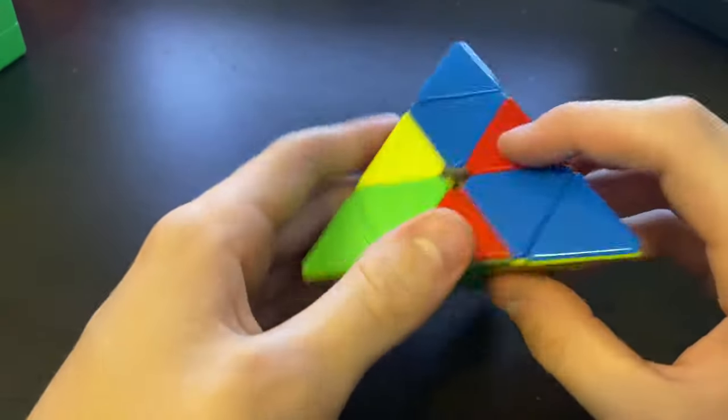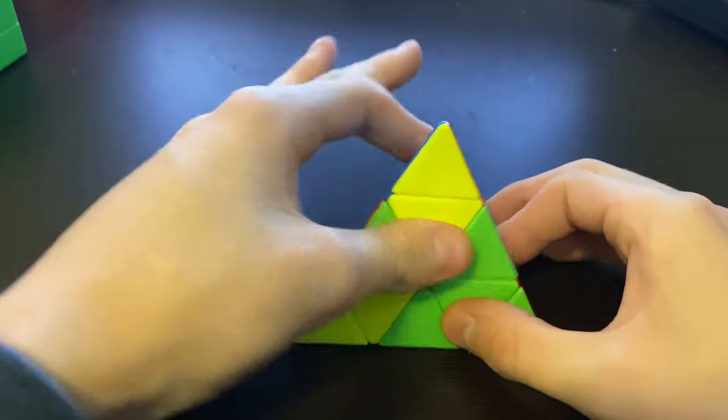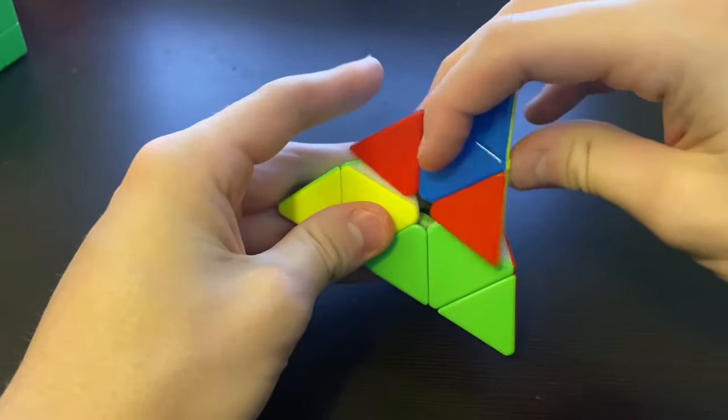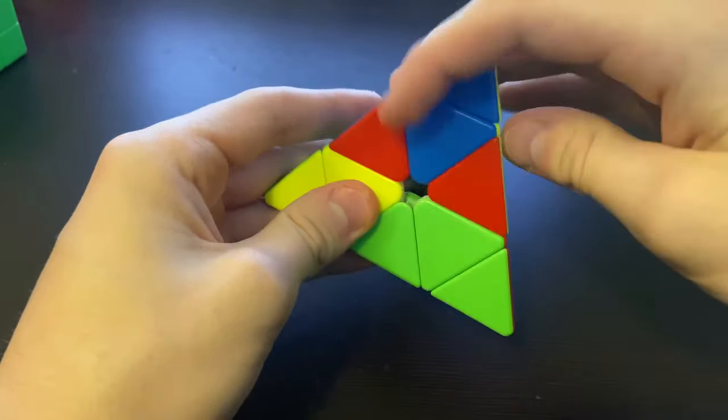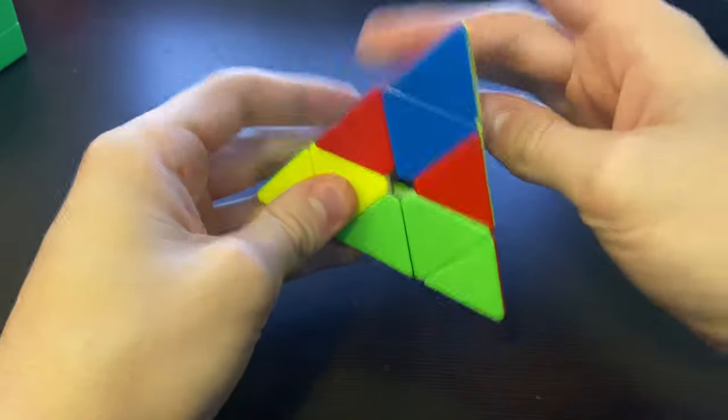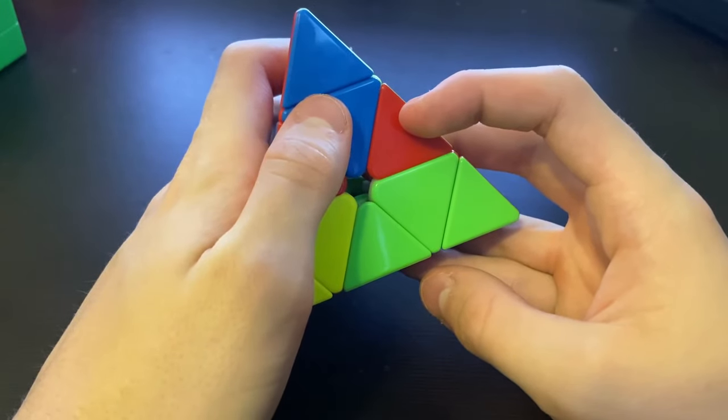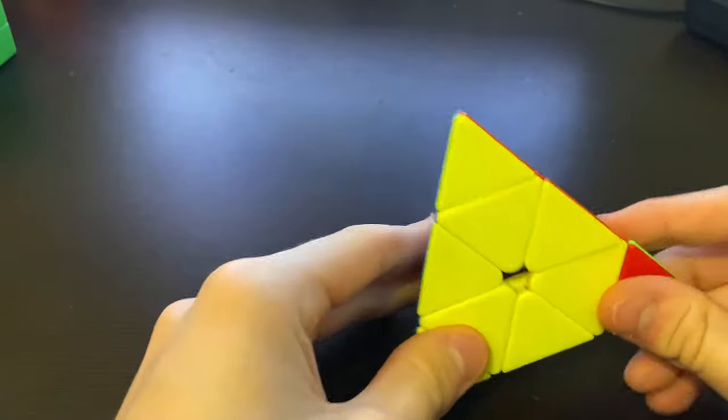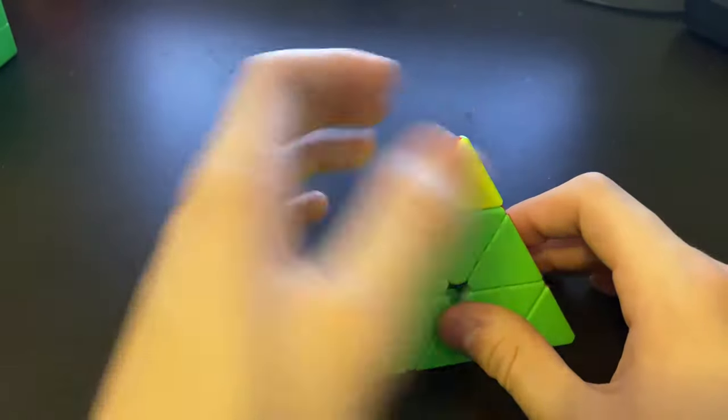You're going to do your first move like this, move the top layer this way. So it started like this, move that way. And then you're going to want to move the right layer like that. And just like that it should be solved. There might just be one tip that I accidentally turned when doing it, but there you go.